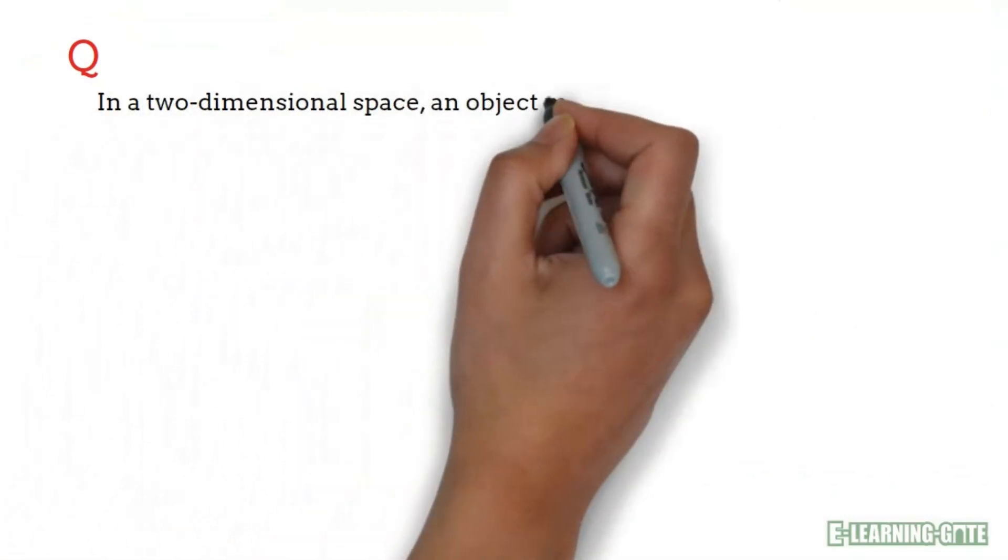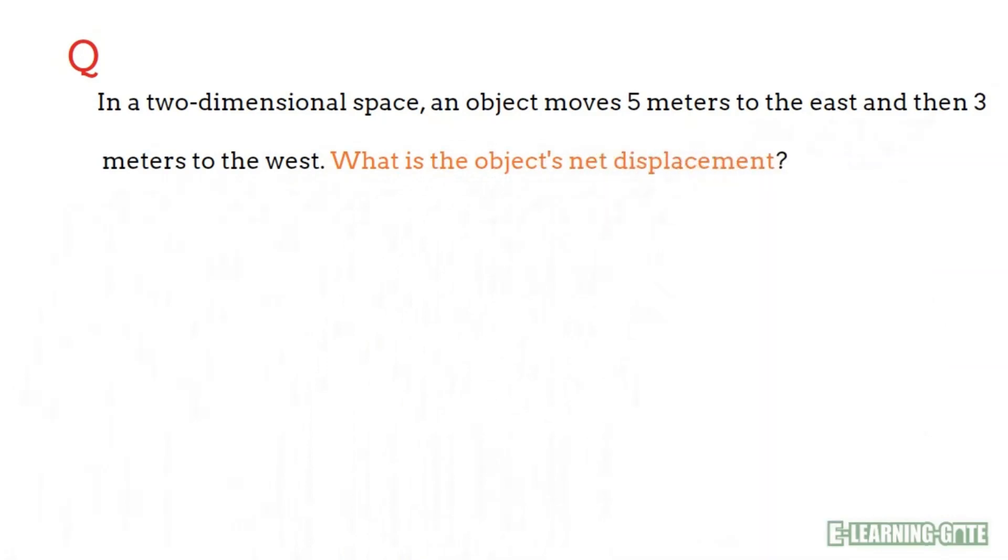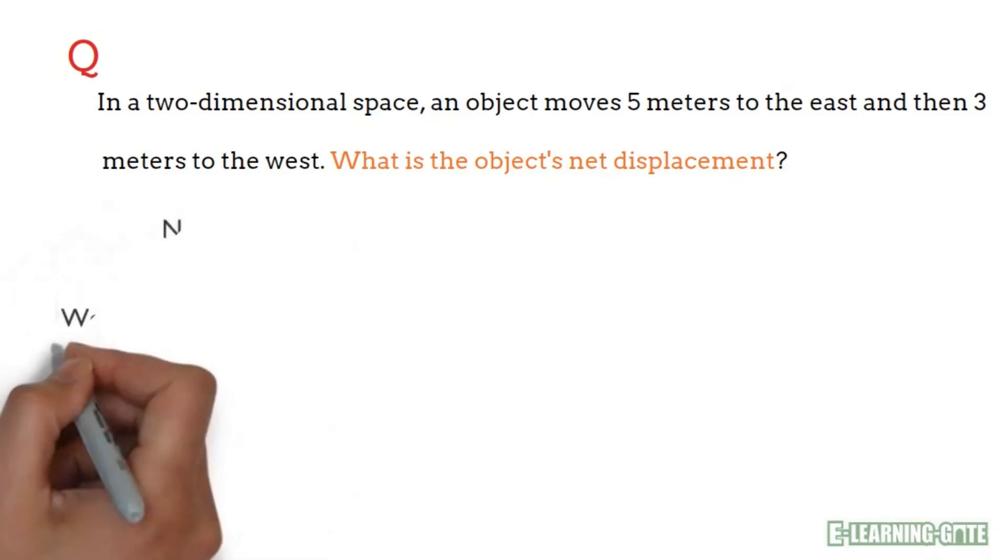Now, let us have a look at a few questions. In a two-dimensional space, an object moves five meters to the east and then three meters to the west. What is the object's net displacement? You can use the direction map.